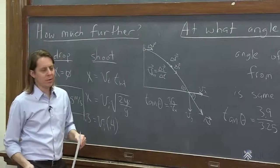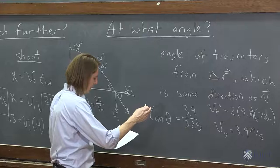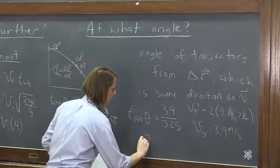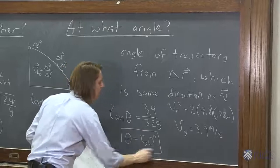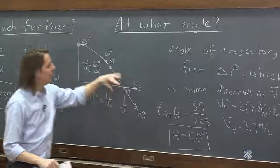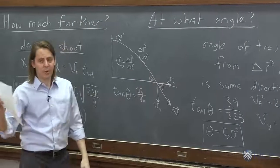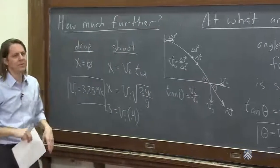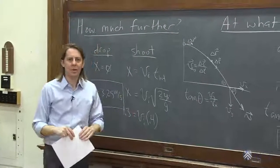You get something a little bit bigger than 1. Inverse tangent of whatever that is, a little bit bigger than 1, and you get theta is 50 degrees. As you'd expect, it landed when the two components were about the same. So it's near 45 degrees. It's 50 degrees. So if you watch the video, maybe you can tell it really was at 50. So this is how you can use kinematics to get much more than just where something ended up.